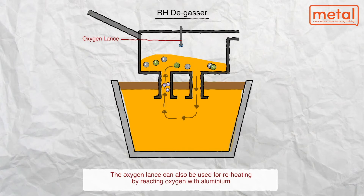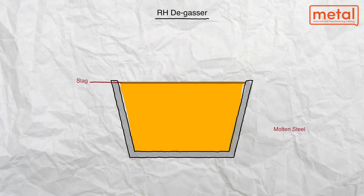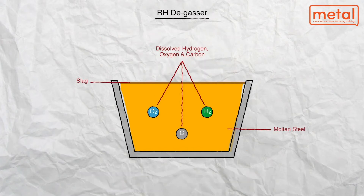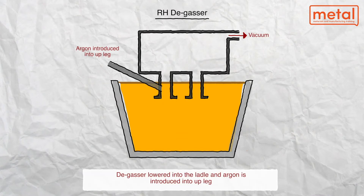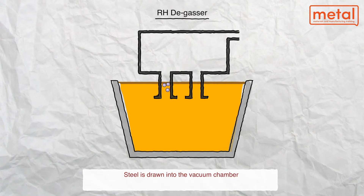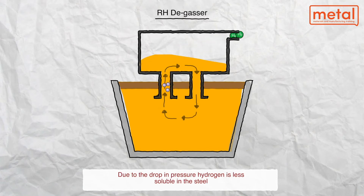Steel is encouraged to circulate up one nozzle and down the other by the injection of argon into the up-leg through a number of small bore pipes. A continuous flow of liquid steel is produced from the ladle into the vacuum vessel, and very high rates of liquid steel circulation can be achieved.